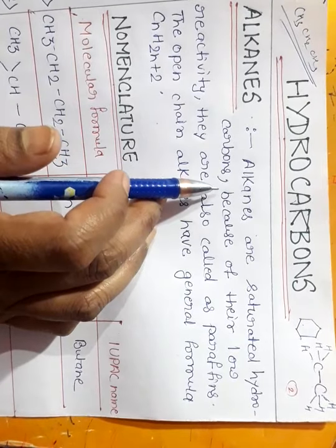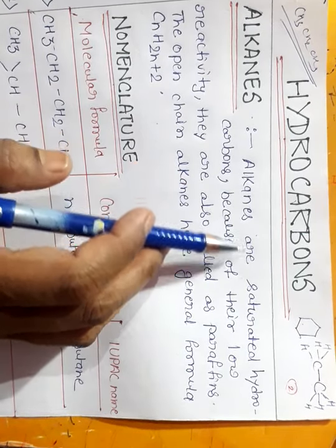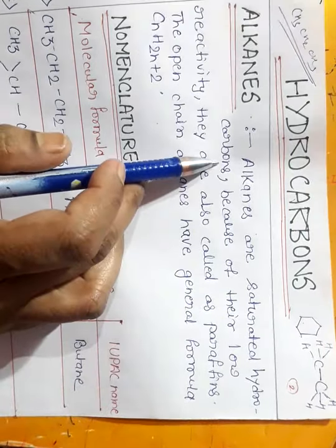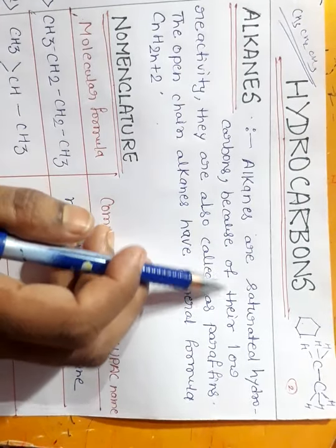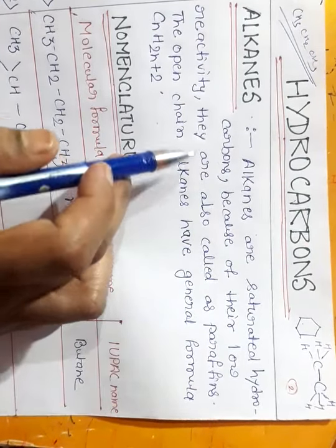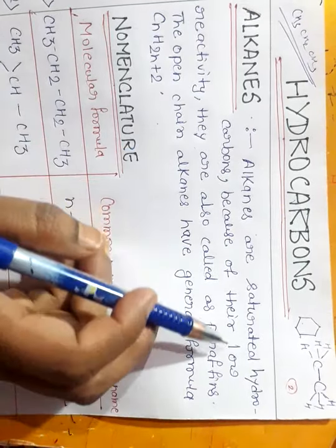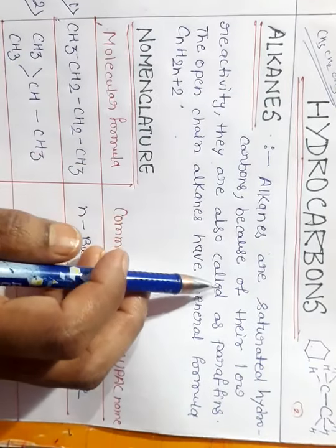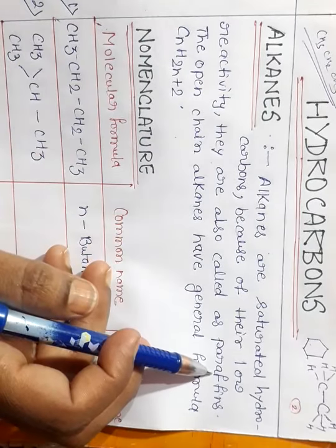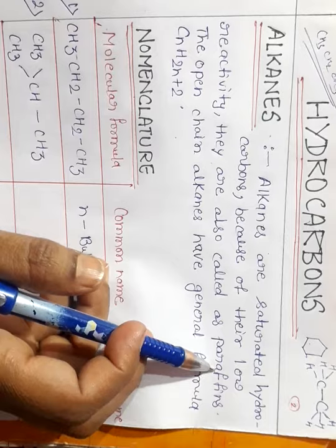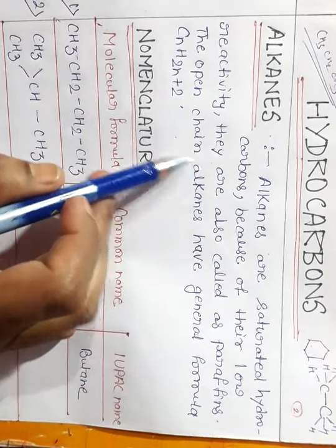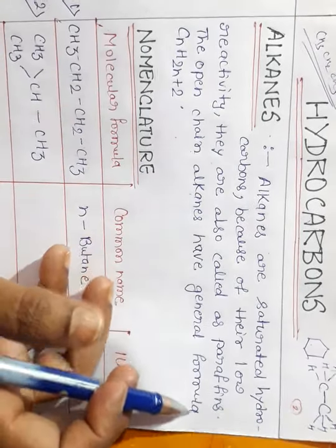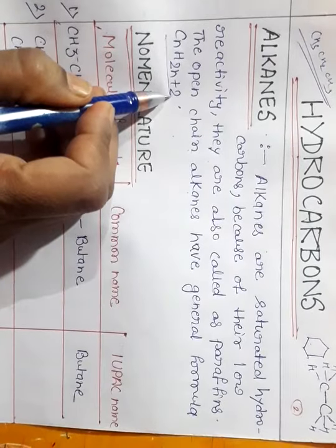Alkanes are saturated hydrocarbons because of their low reactivity. They are also called paraffins. The open-chain alkanes have the general formula CnH2n+2.